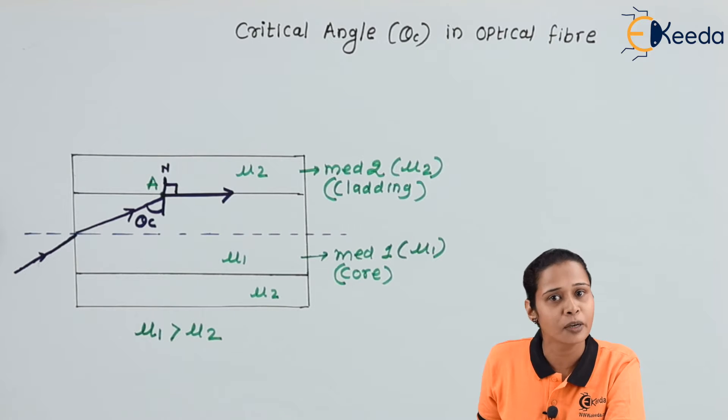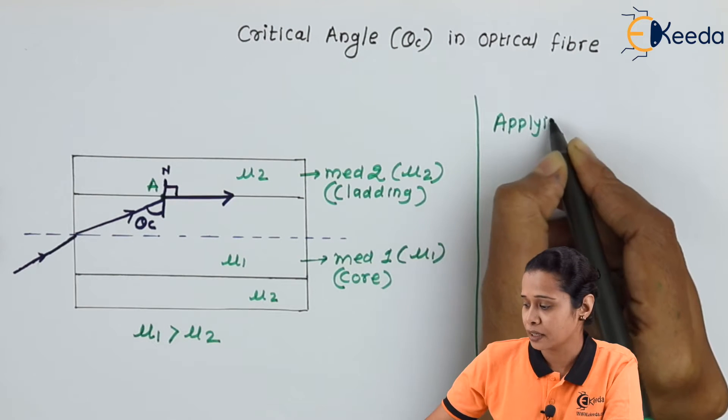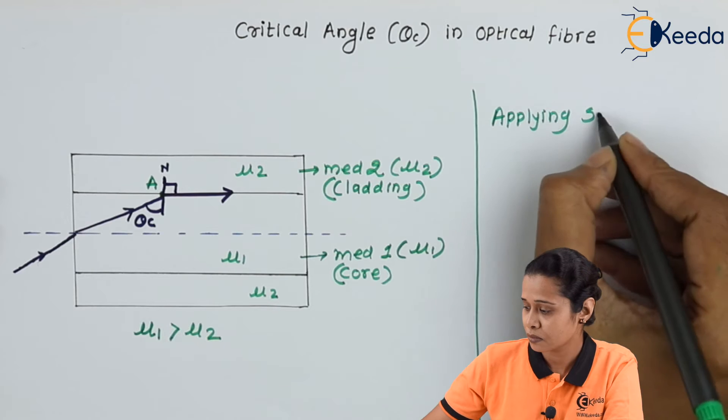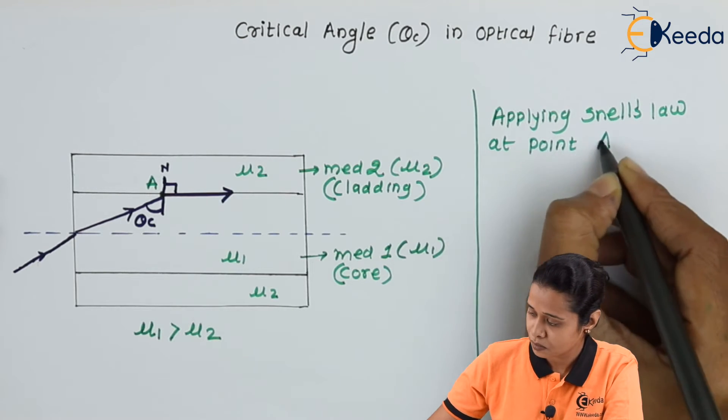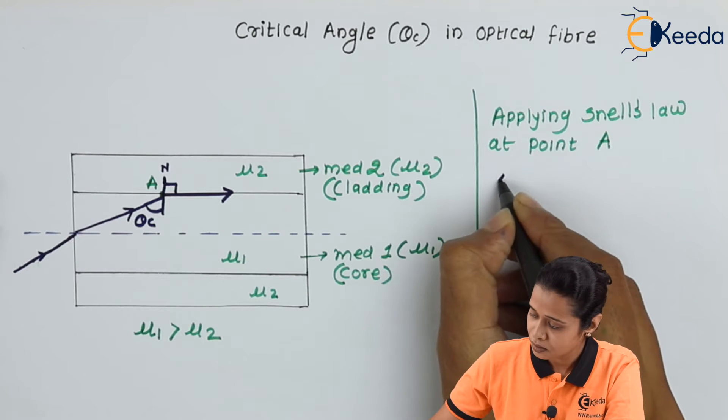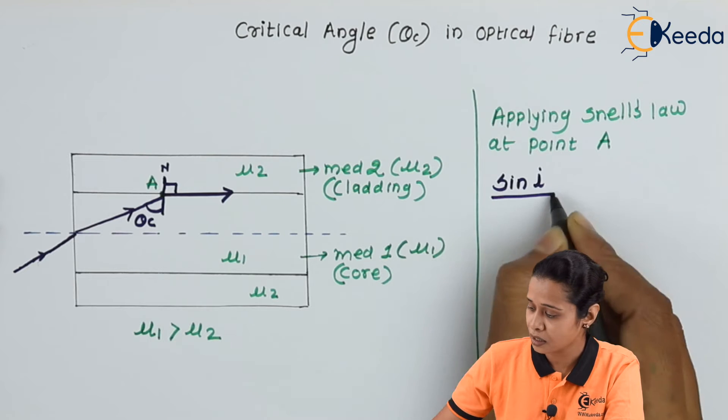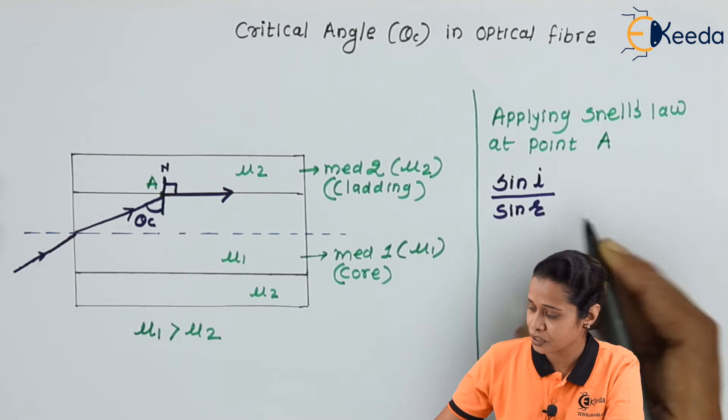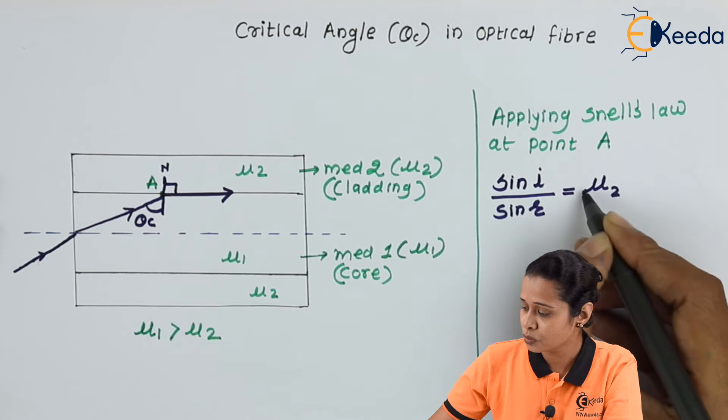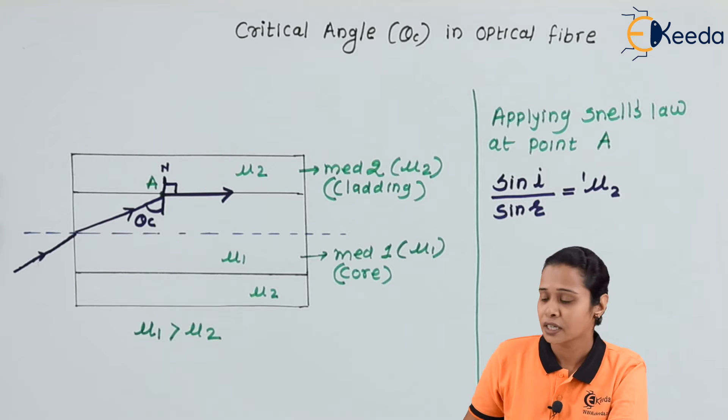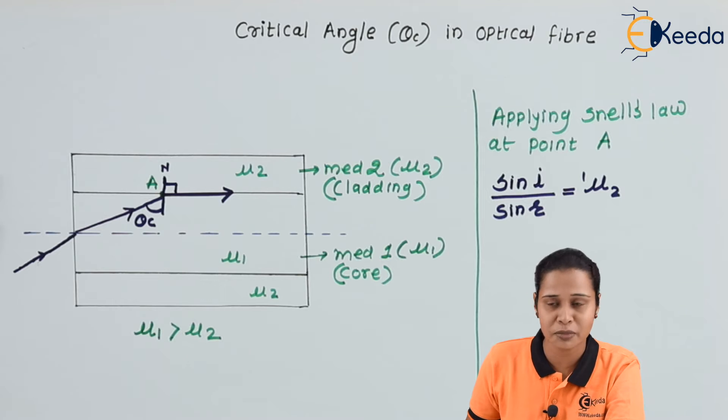Now, apply Snell's law at point A. As per Snell's law, sine of incident angle upon sine of refraction angle is equal to μ₂,₁, which means the refractive index of second medium with respect to the refractive index of the first medium.